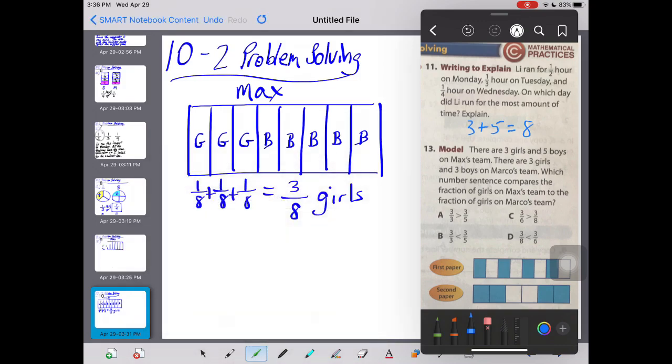Now let's take a look at Marco's team. So let's draw another rectangle about the same size because we're comparing one team against another. Marco's team has three girls and three boys. So if I was to say three girls and three boys, then that would be three plus three, and that gives me six people on the team. So there's only six.